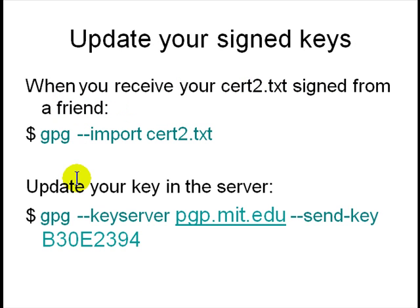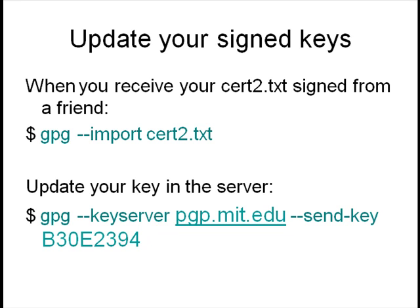When your friend sends you your signed key back, you can import the certificate file into GPG and then send it to the PGP server saying 'here's my key — it's been signed by these people.' The server will update it with whatever signatures it has. The server knows it's valid because nobody else could have signed it except the person who actually claims to have signed it. The server doesn't know anyone's private key — it only knows everyone's public key — so it can check things but can't edit things for you.